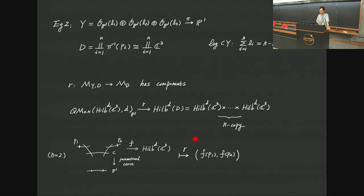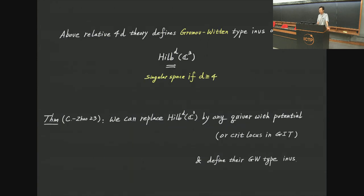A closed point of this map looks like the following: a point is given by a map f from a configuration of rational curves to the Hilbert scheme of points on ℂ³, where the rational curve has a distinguished component isomorphic to ℙ¹ contracting all other rational tails, with two special points p₁ and p₂. In the n = 2 case we can evaluate at these two points to get points in the Hilbert scheme. So the restriction map evaluates at these two points and gives a point in the Hilbert scheme of points. Thus the 4D theory defines Gromov-Witten type invariants for the Hilbert scheme of points on ℂ³.